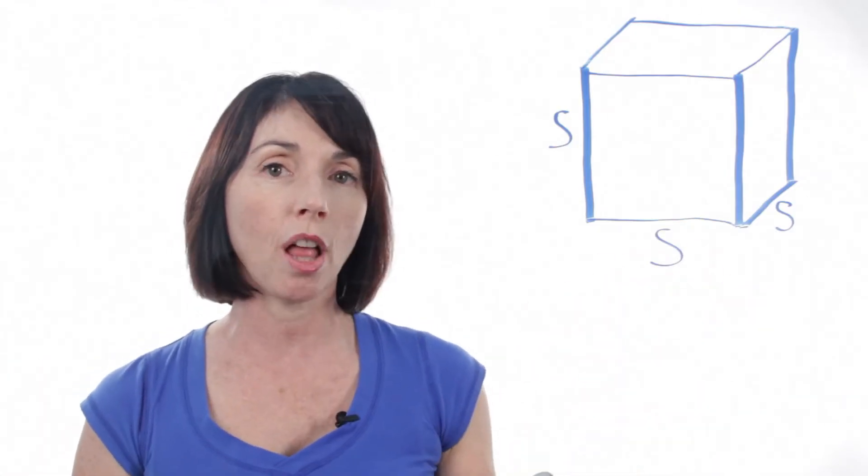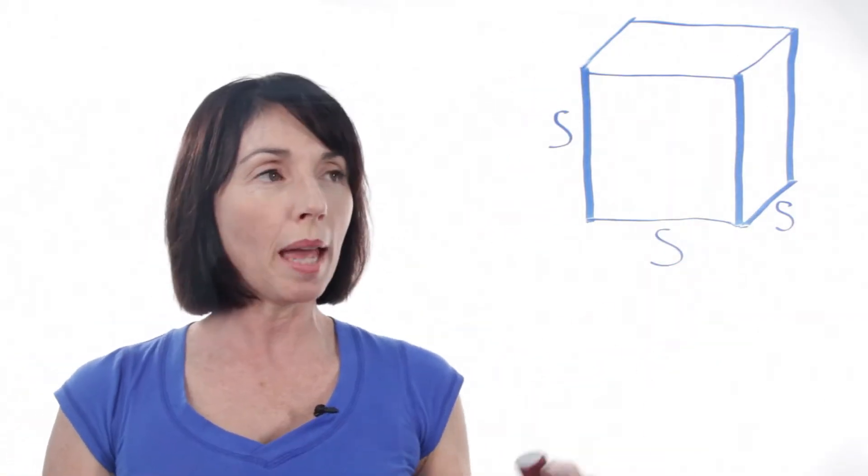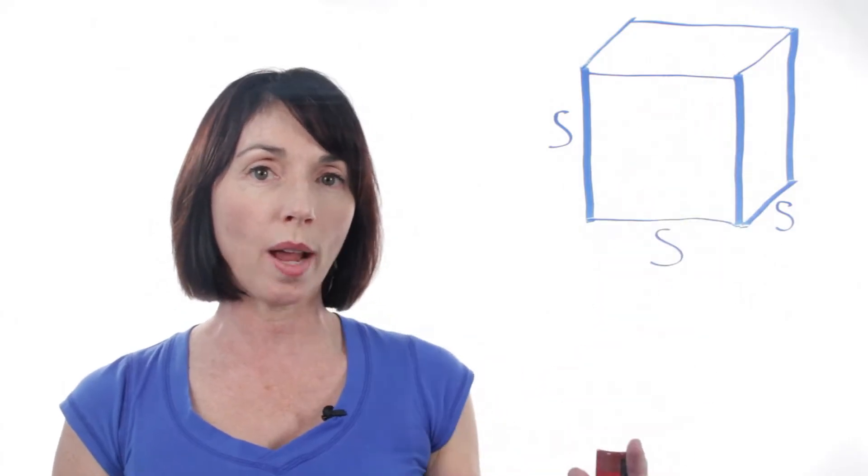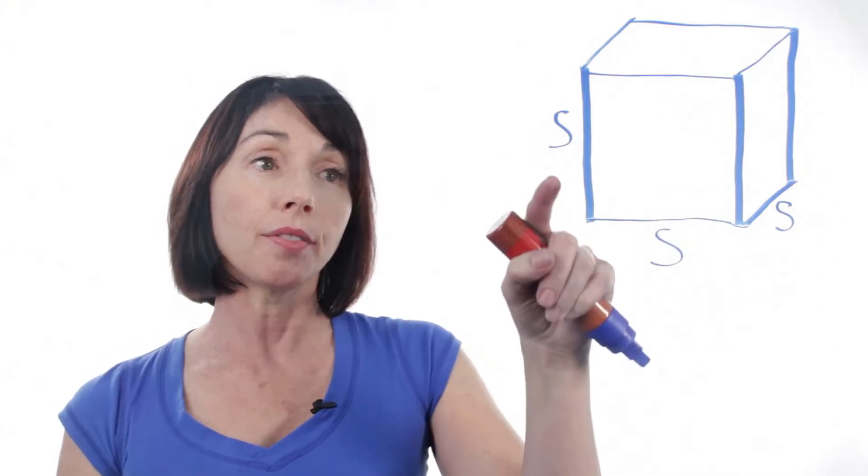Now a cube is a three-dimensional object and the volume measures the space inside of it. Because it's a cube, that means each face of it is a square. That means that every edge is the same length, and I've just called them s.